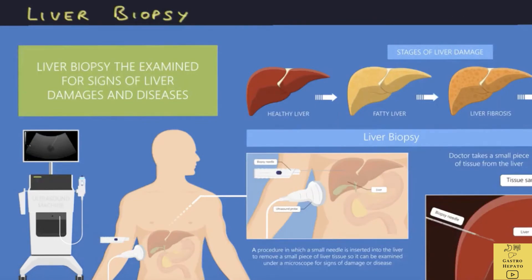Liver biopsy is the best method to look for inflammation and fibrosis of the liver. A small piece of liver tissue is removed using a needle. However, it is an invasive procedure and can occasionally result in bleeding into the liver. Non-invasive tests like the scans and blood tests I mentioned have now largely replaced liver biopsy.